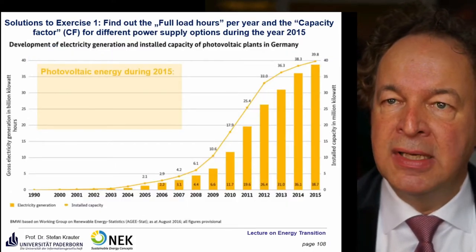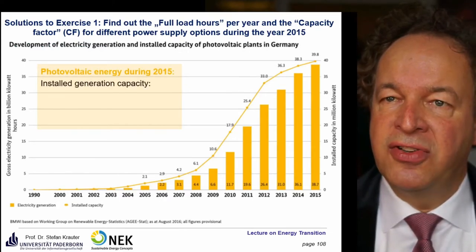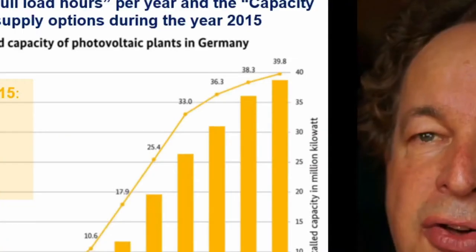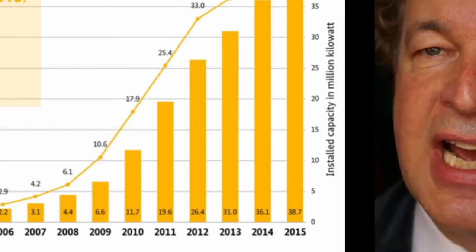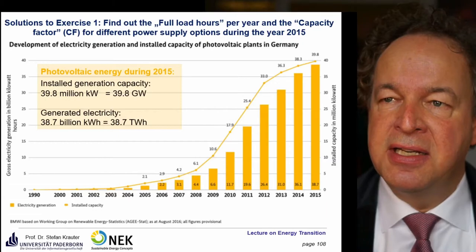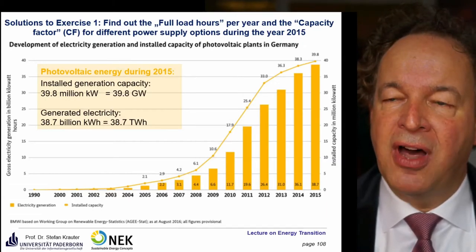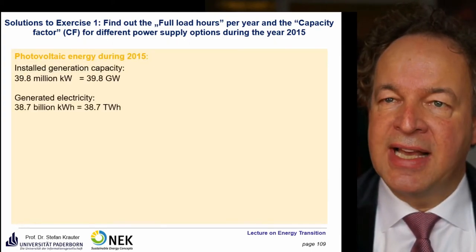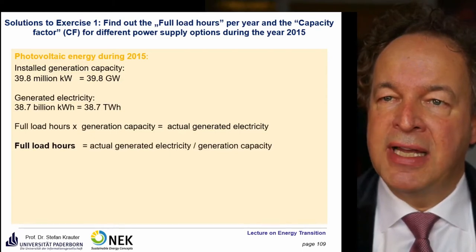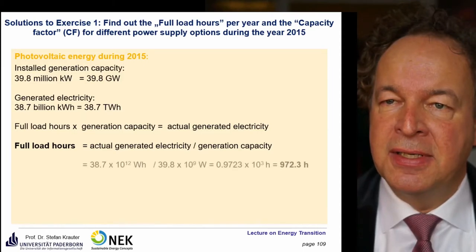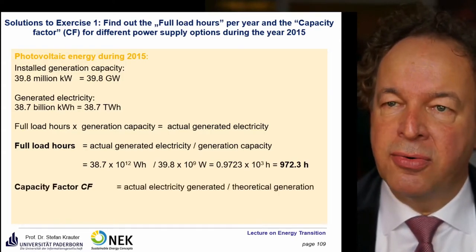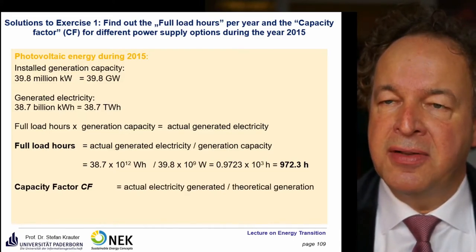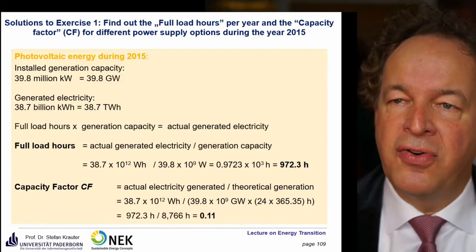Let's take a look at solar power. For photovoltaic energy during 2015, the installed generation capacity is 39.8 gigawatt, and it generated only 38.7 terawatt hours. Already from these numbers, you can see that the number of full load hours will be in the vicinity of about 1,000 hours. Calculating it more exactly: actual generated electricity divided by generation capacity gives 972.3 hours. The capacity factor is the actual electricity generated divided by the theoretical generation, and putting in the numbers we find a capacity factor of only 0.11.